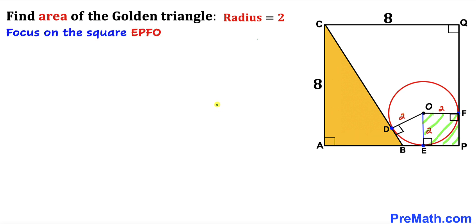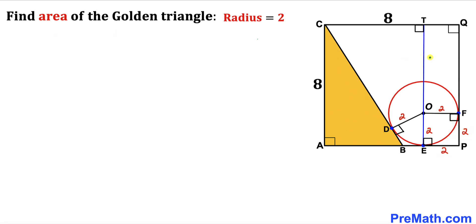Now let's focus on square E, P, F, O. All sides of this square are 2 units. In the next step I have dropped perpendicular TE that passes through center O. Therefore length EP equals length TQ. Since the side length is 2 units, this length TQ is going to be 2 units as well.